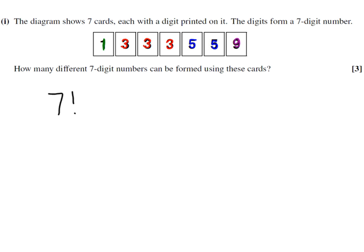Now, the difference is here some numbers are repeated. So you wouldn't know the difference when you made this number 1,333,559 if this three was here or this three was here, for example. We can make this same number a lot of different times and we need to get rid of these repeats, because it's still the same number. We don't want to count it more than once.